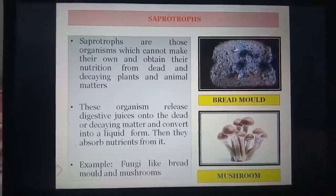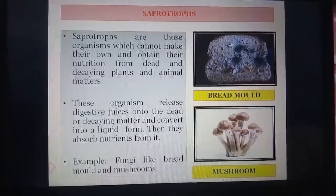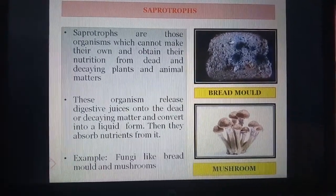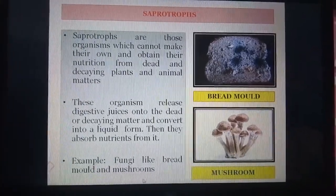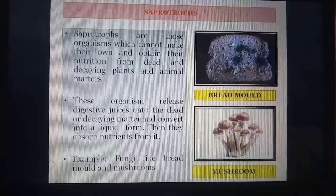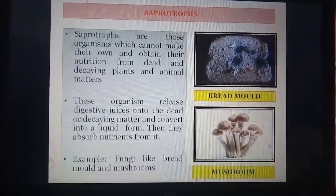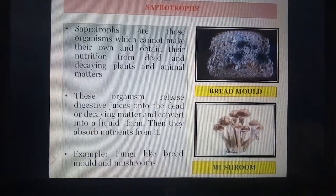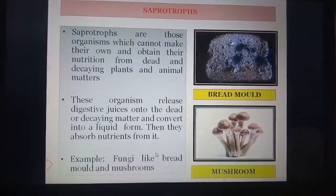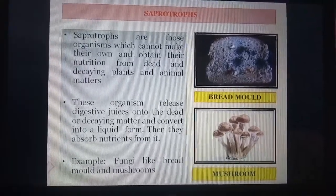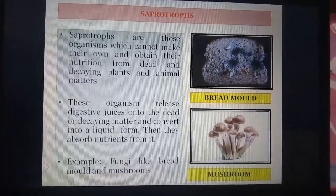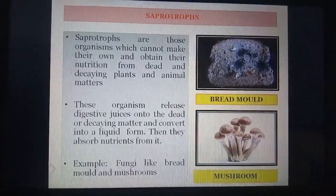Plants which use saprotrophic mode of nutrition are called saprotrophs. Saprotrophs are organisms which cannot make their own food and obtain nutrition from dead and decaying plant and animal matter. Examples are fungi like bread mold and mushrooms — mushrooms that you might have seen being sold in the vegetable market and enjoyed as a delicacy. Fungi also grow on pickles, leather, clothes, and other articles left in hot and humid weather for a long time or during the rainy season. The fungal spores are present in the air; when they find a suitable substratum, they land on it and grow.